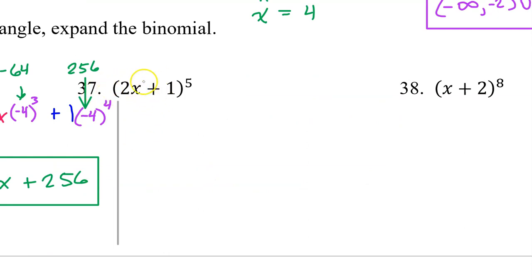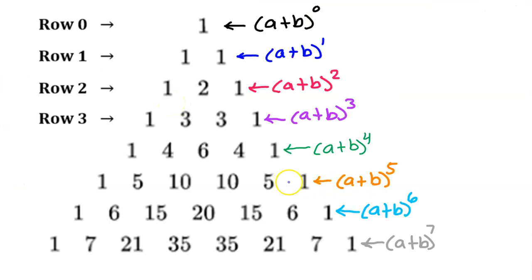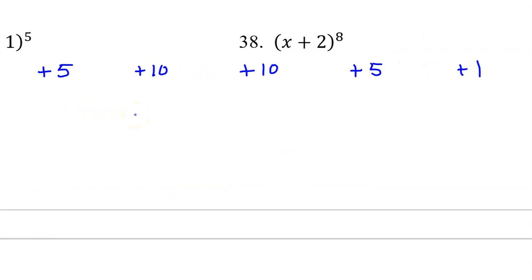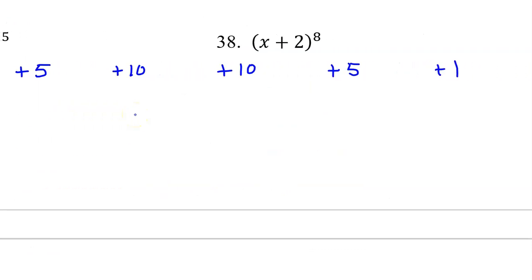For number 37, we have a binomial raised to the fifth power. So I need to pick the correct row from Pascal's triangle. The coefficients will be the 1, 5, 10, 10, 5, 1. Apologies to number 38, I'm going to have to go into the air space of number 38 a little bit here.